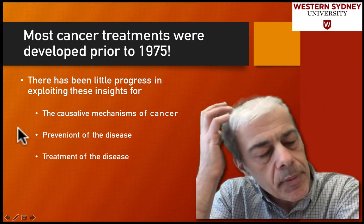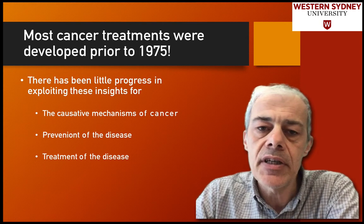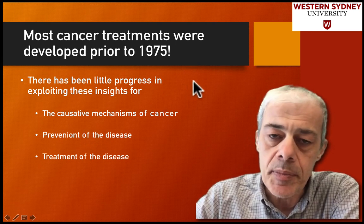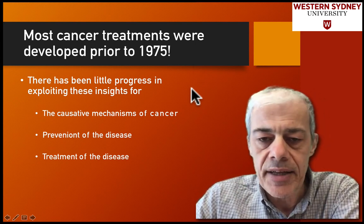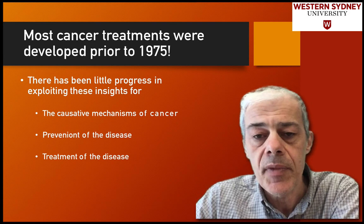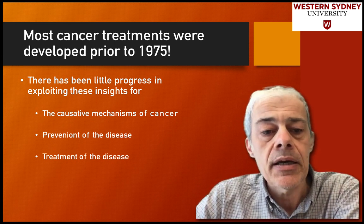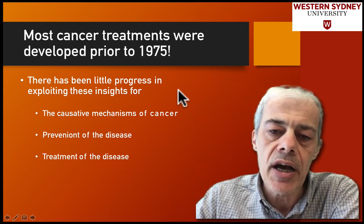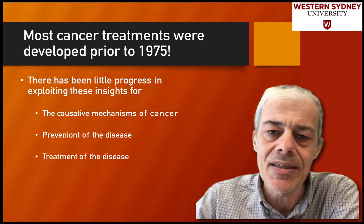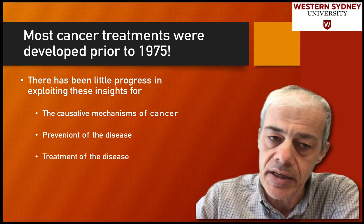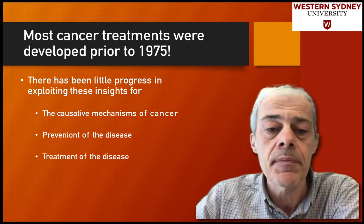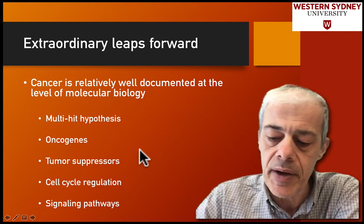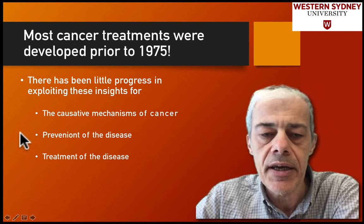Looking at the history of cancer treatment, even today a lot of treatments used in the clinic come from an earlier period — the mid-1970s. In that era we didn't have high-throughput sequencing technology, and we knew a lot less about biology, yet a couple of highly effective techniques were developed that are still widely used. Despite all of our current understanding, we still have difficulty preventing and treating cancers.